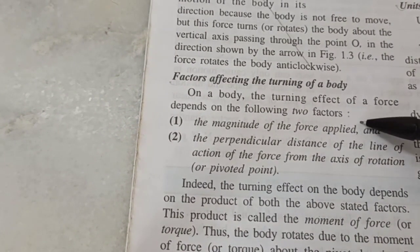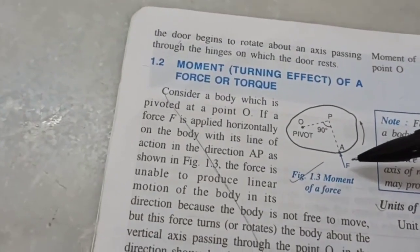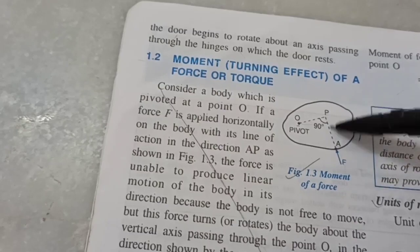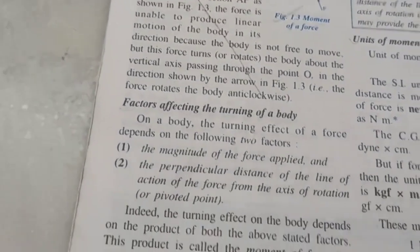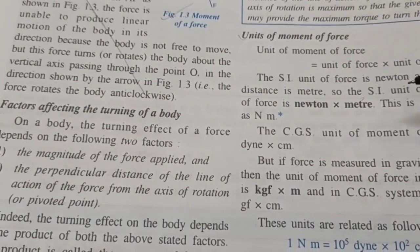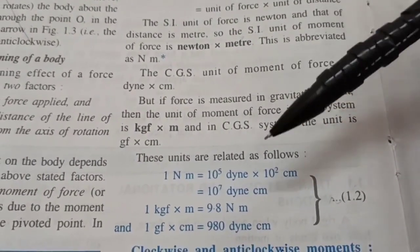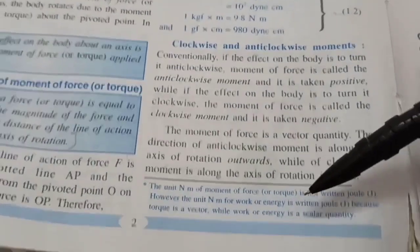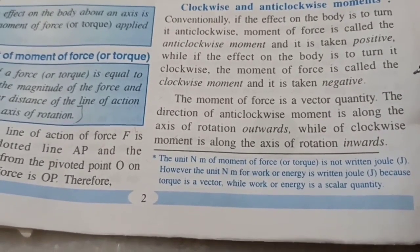Moment of force is also called torque. Two factors affect the turning effect: the magnitude of the force, and the perpendicular distance of the line of action of the force from the axis of rotation. For example, if F is 10 N and the perpendicular distance is 1 m, the moment of force is 10 × 1 = 10 N·m. The SI unit of torque is newton metre, and the CGS unit is dyne centimetre. Note: newton metre cannot be substituted with joule, since torque is a vector quantity, unlike work.